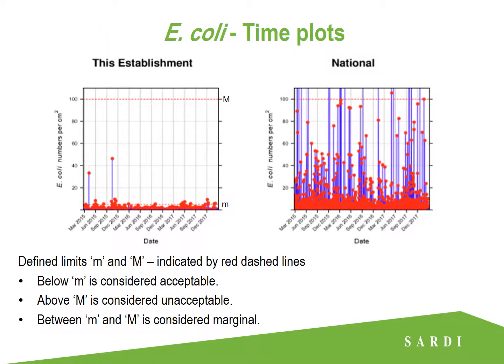The last type of plot in our ESAM reports are the E. coli time plots, which show the number of positive E. coli results — those red points — and where they occur: whether they're below, between, or above the defined limits, your little m and your big M, indicated by those red dashed lines. Results below little m are considered acceptable, above big M are considered unacceptable, and between little m and big M are considered marginal. These plots can be useful to compare E. coli levels at individual plants compared to those found nationally over the same time period, but the national plot has so many detections it's quite difficult to read. So focus on your own establishment's results and how you're tracking in terms of those acceptable, unacceptable and marginal E. coli counts.